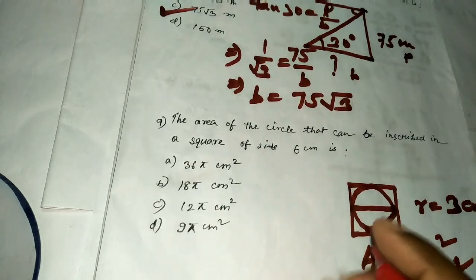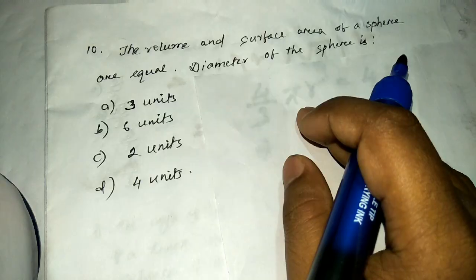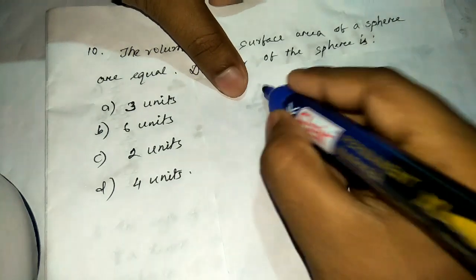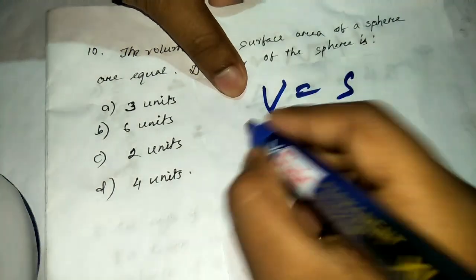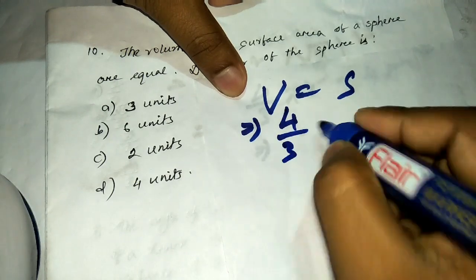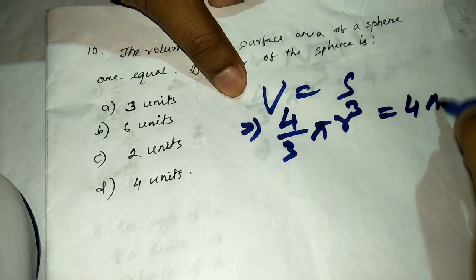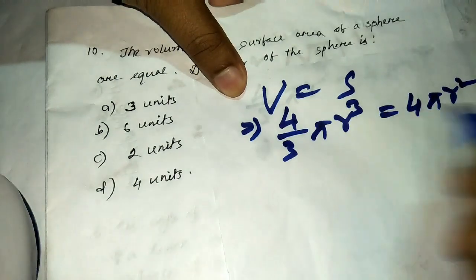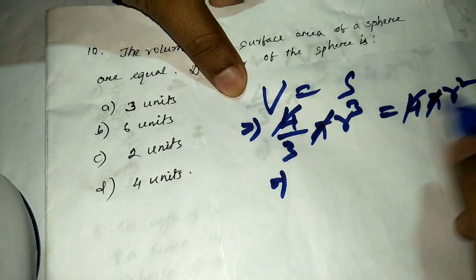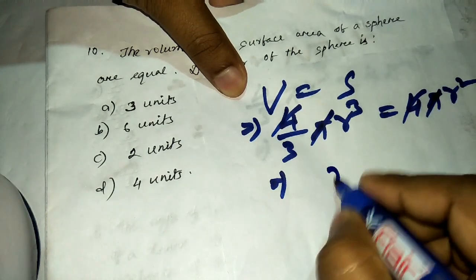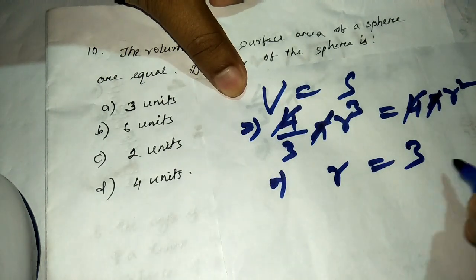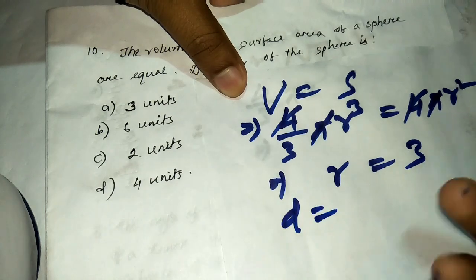The area is 9π cm², which is option D. Question number ten: the volume and surface area of a sphere are numerically equal; find the diameter. Set volume equal to surface area: (4/3)πr³ = 4πr². Cancel 4, π, and r² from both sides to get r/3 = 1, so r = 3.